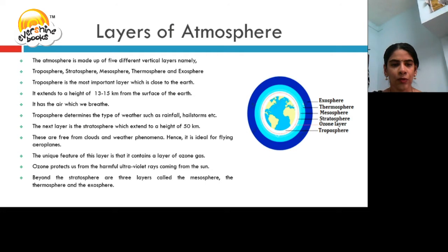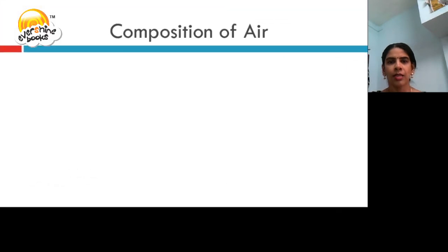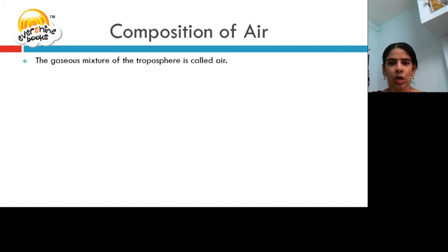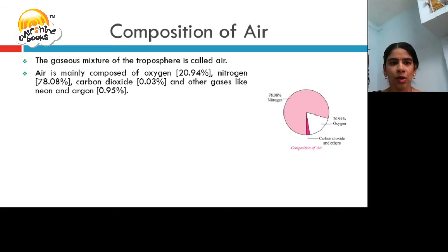Beyond the stratosphere are three layers called mesosphere, thermosphere, and exosphere. The gaseous mixture of the troposphere is called air. Air is mainly composed of oxygen 20.94%, nitrogen 78.08%, carbon dioxide 0.03%, and other gases like neon and argon 0.95%.